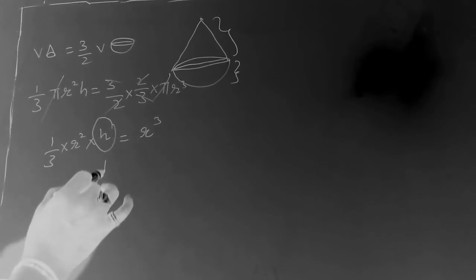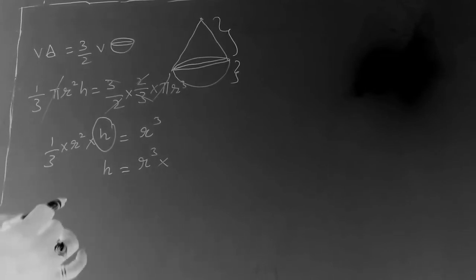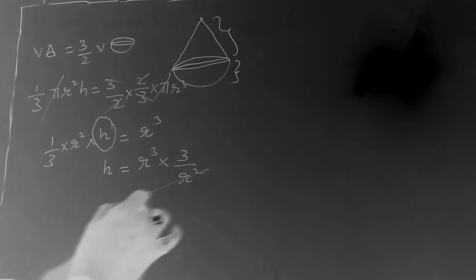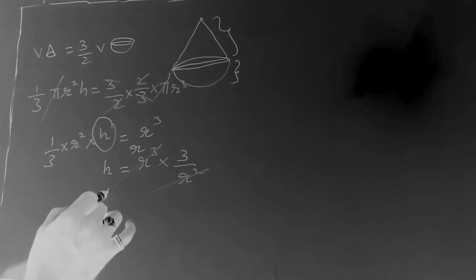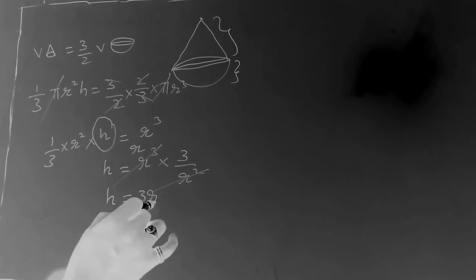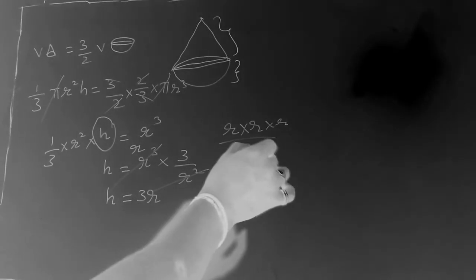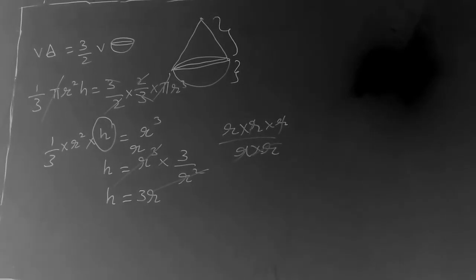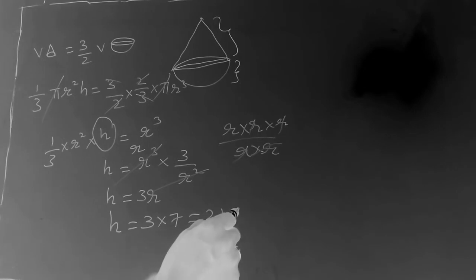To find h, we move r² and 3 to the right side. When the fraction r²/3 moves to the right side it becomes 3/r². Then r² cancels with r³, leaving r. So h = 3r. Since the radius is given as 7 cm, h = 3 × 7 = 21 cm. That is the height of the cone.